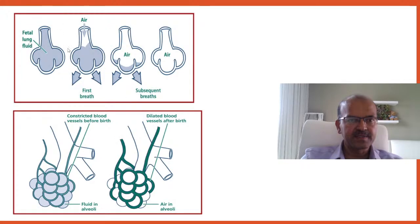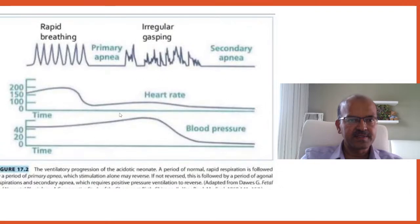The fetal lung is filled with fluid, partly absorbed during labor. Without labor — such as in elective cesarean section or precipitate labor — there is less time for fluid absorption, so the baby has more fluid in the lungs at birth. As the lung inflates, air opens the alveoli and the previously constricted blood vessels open in response to oxygen exposure. Increasing lung volume and opening of pulmonary blood vessels happen simultaneously.